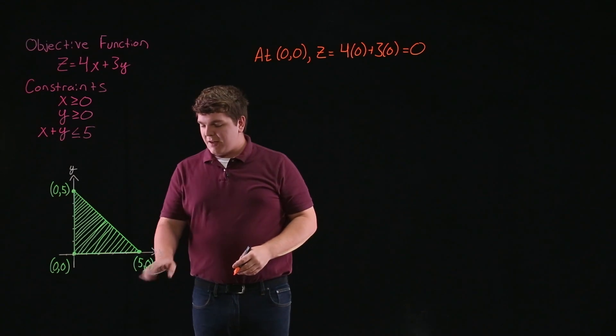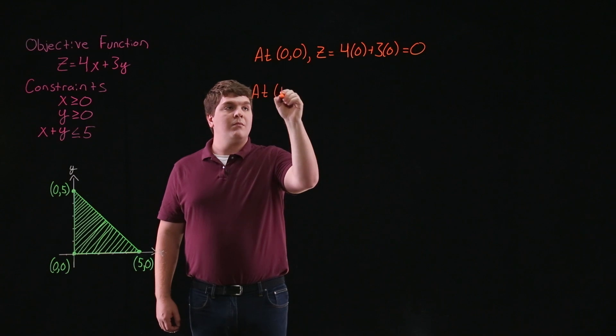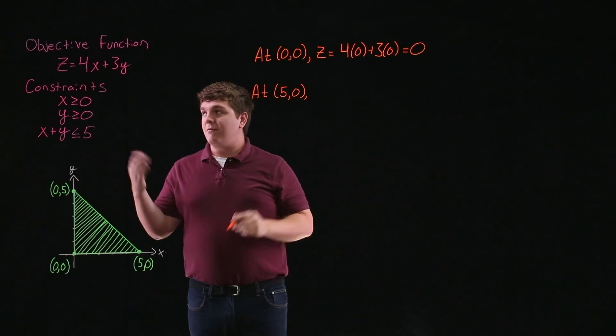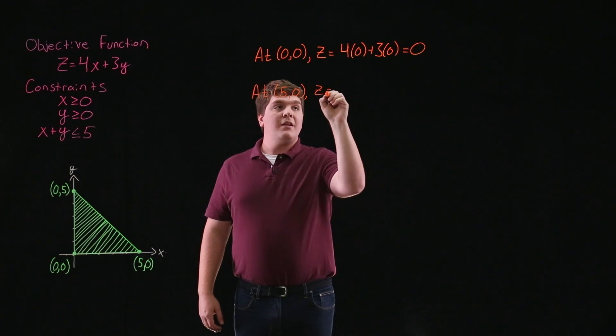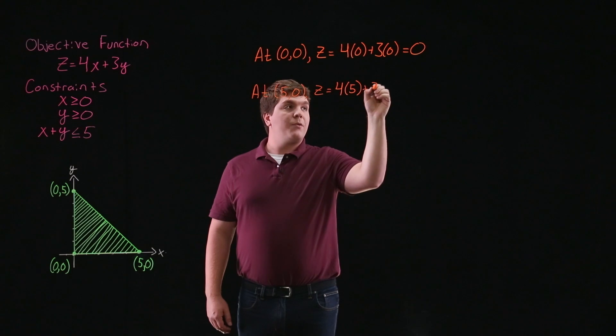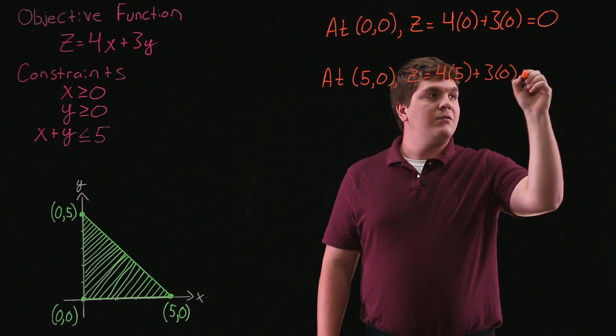Now looking at our next vertex, 5, 0, we're going to have that z is equal to 4 times 5 plus 3 times 0, and this is equal to 20.